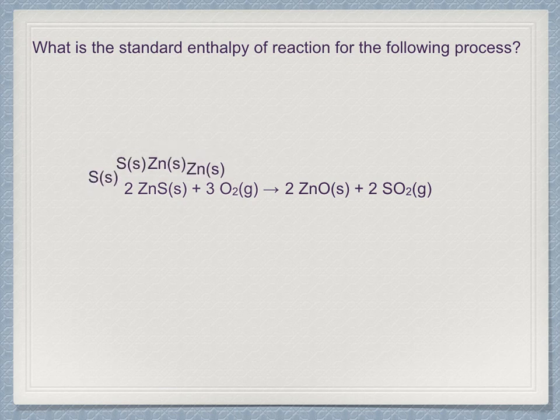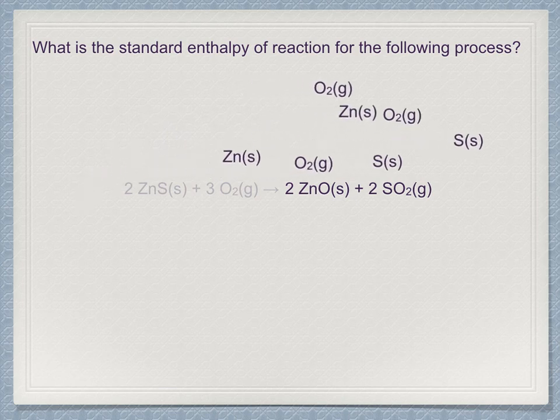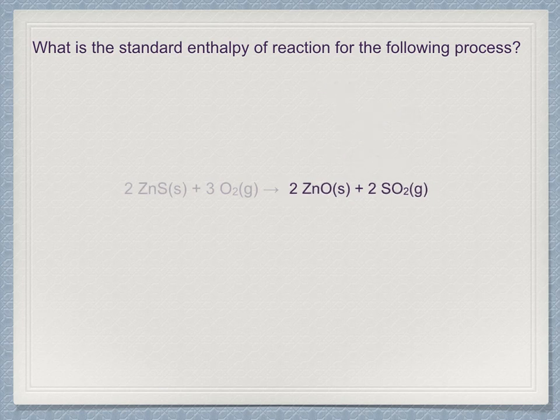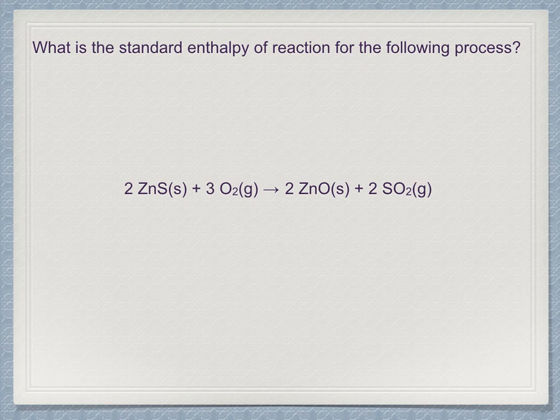Imagine the reactants to be broken up into their constituent elements. Such processes would be the reverse of the relevant formation process. Then imagine those elements being recombined to form the products. This would be the formation reaction for those substances. The overall enthalpy change of this hypothetical process must be the same as for the direct process implied by the original equation, since enthalpy is a state function.